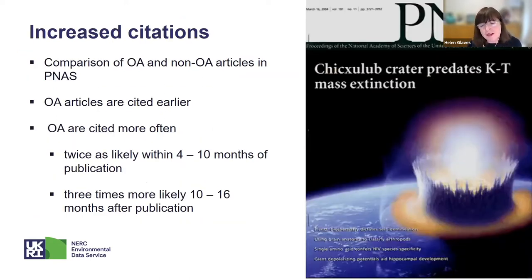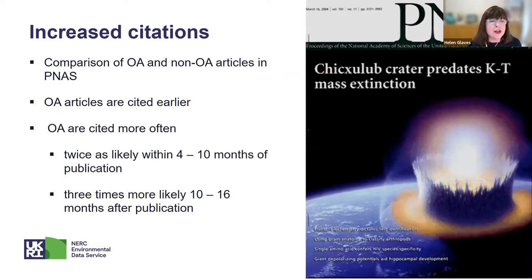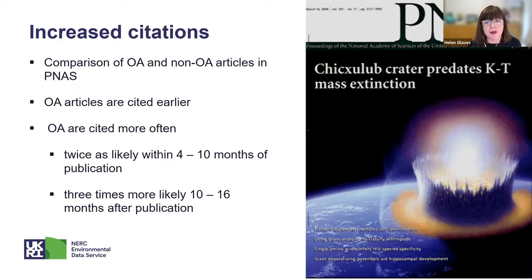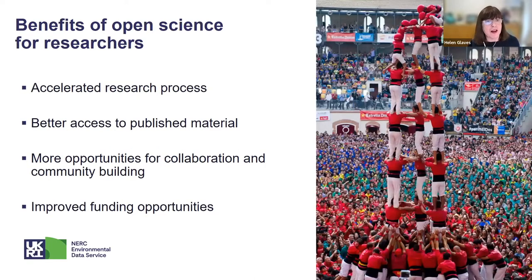There have been exercises to quantify the impact of open access publishing on citation levels. A comparison of open access and non-open access articles in PNAS showed that open access articles are cited earlier — available to a wider range of researchers — and cited more often. They are twice as likely to be cited within the first four to ten months of publication, and three times more likely within ten to sixteen months after publication.